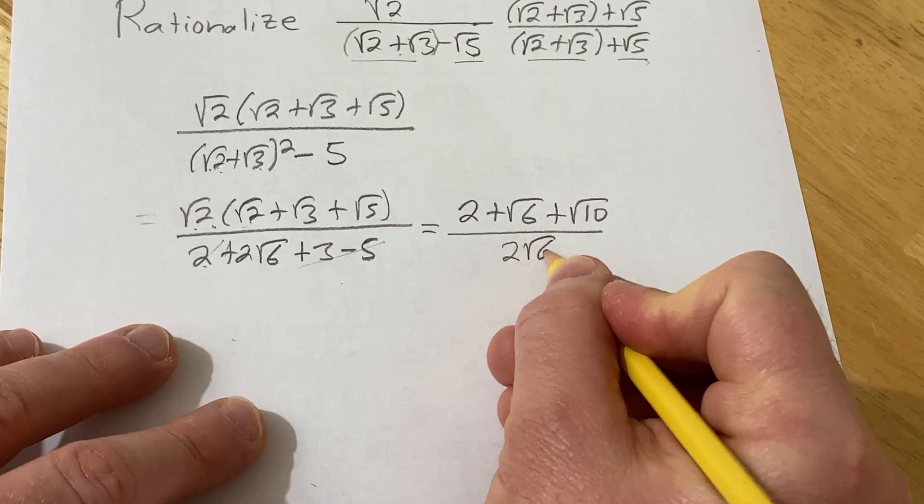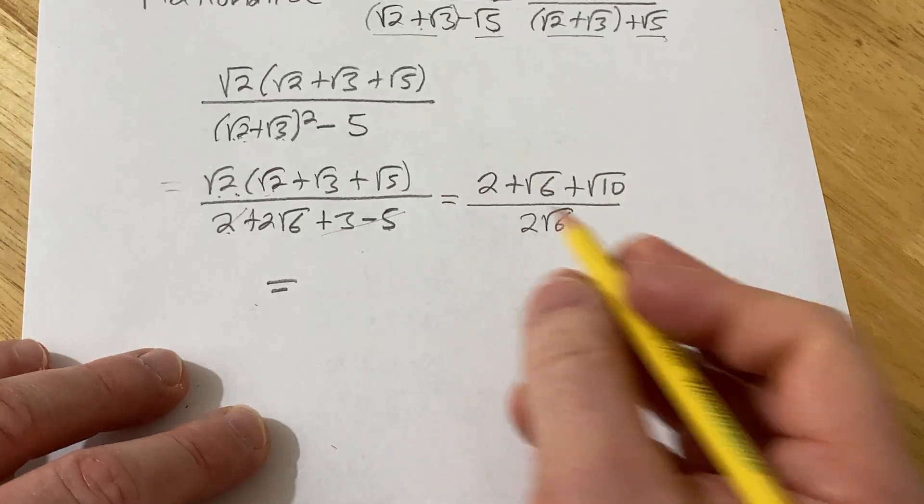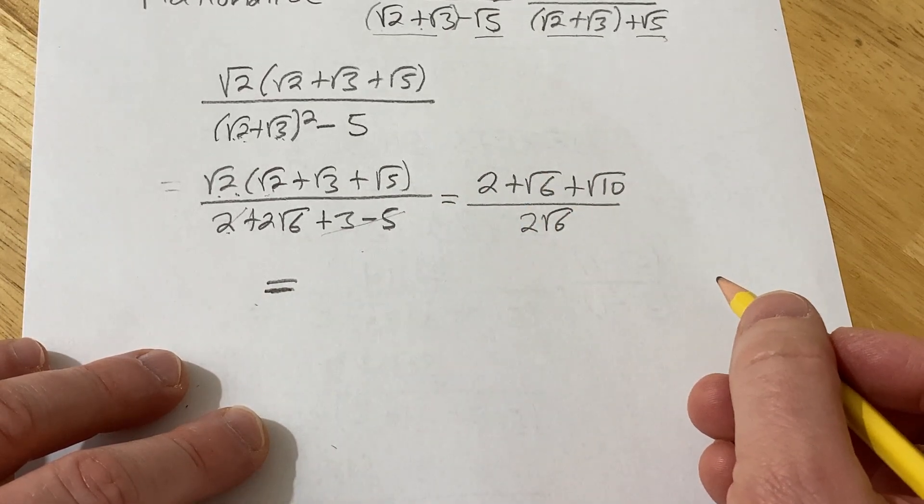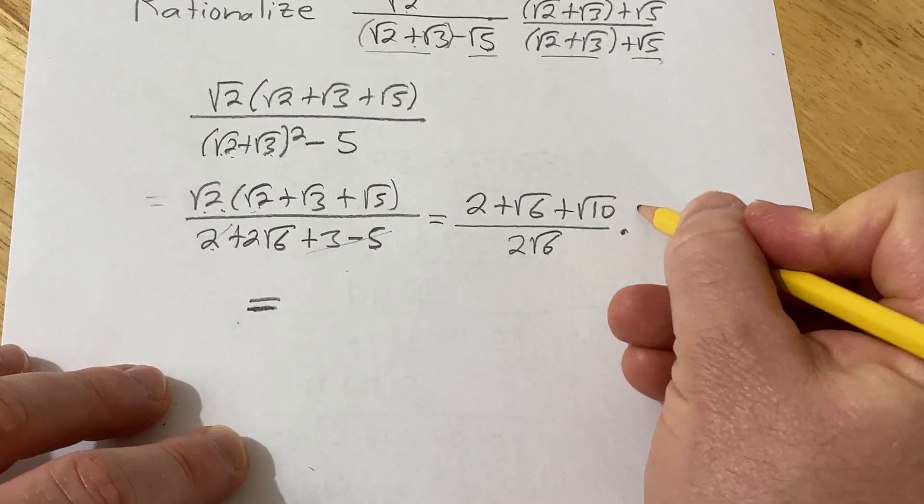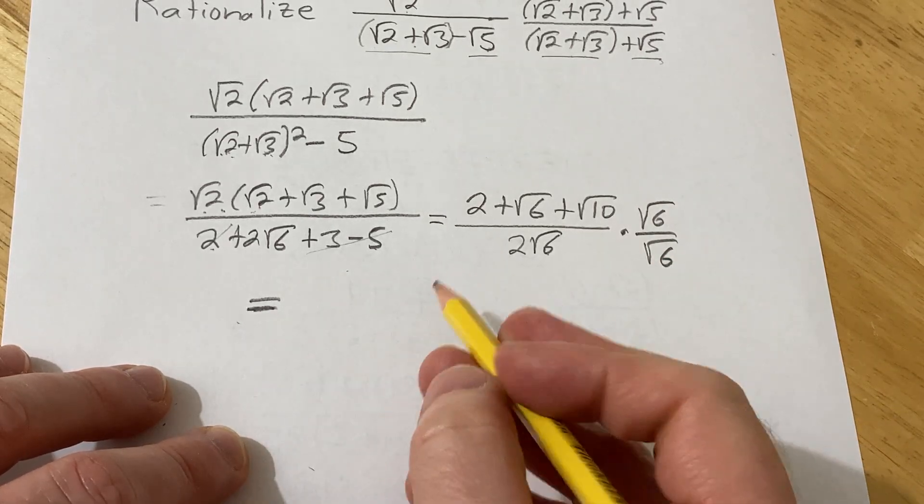So we just have 2 square root of 6. Didn't expect it to be this simple. This is equal to. I was ready to keep going and do all kinds of crazy things, whatever it takes. So now we need to get rid of this square root of 6. So we're going to multiply by this. Okay, and let's see what happens there.